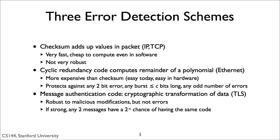The second of the three commonly used error detection algorithms is a cyclic redundancy code or CRC. A CRC is much more computationally expensive than a checksum, but also much more robust. It computes the remainder of a polynomial. With today's processors it's easy to do, and it's really easy to do in hardware. It's what Ethernet and many link layers use.